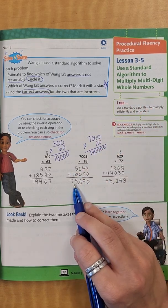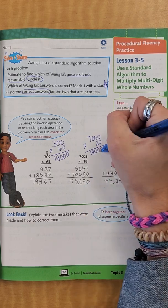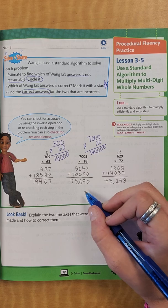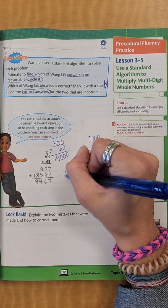Now when I look at this, this is 75,690. This one is 140,000, so would this be a reasonable one? No. This doesn't look like it would be reasonable. So I'm going to circle this one.